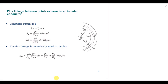In this lecture we are going to find the flux linkage between points external to an isolated conductor. In the last lecture we found the flux linkage inside the conductor and from that calculated the inductance. Now we will find the flux linkage outside the conductor and from that we will calculate the inductance.